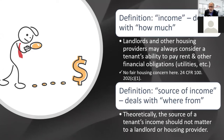The question we're looking at today is source of income — where the income came from. Theoretically, the source of income should not really matter to a landlord or housing provider. One would think it wouldn't, but apparently it's become a very controversial thing.